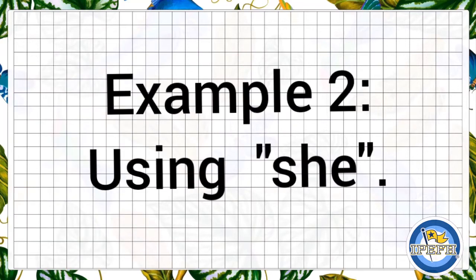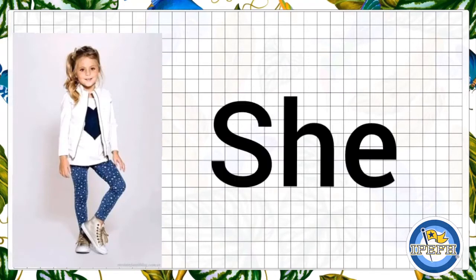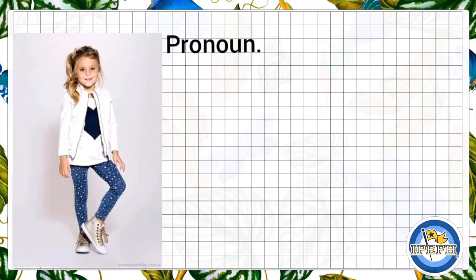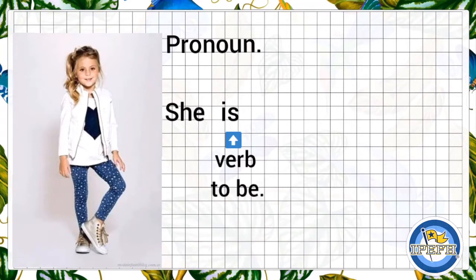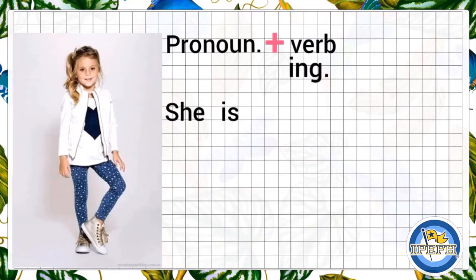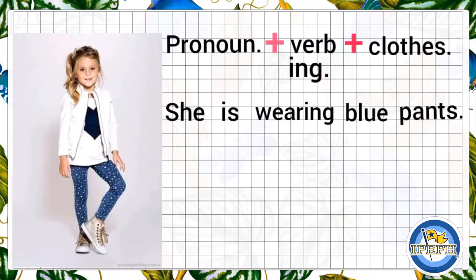Now let's go with she. Remember, we use she for girls. It is the same. First is the pronoun. The pronoun is she. Then the verb to be, and it is is. Then the verb in present progressive. The verb is wearing. And finally, the cloth — color of the cloth and which cloth it is. So the sentence is: she is wearing blue pants.